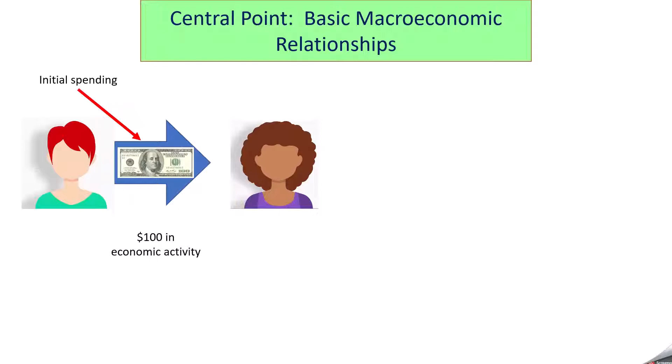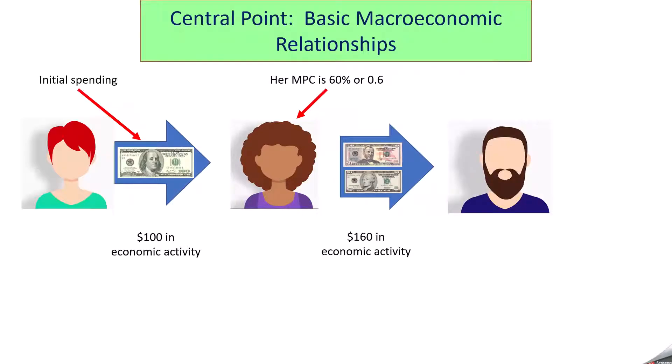Now she's received $100 in new income, and she has to decide, what am I going to do with this new income, this additional income? Maybe her MPC is a 60% or a .6. So she decides to spend $60 of that $100 and save the other $40. And when we add that to the $100 that's already been spent, we now see that there's $160 in economic activity that's occurred from that initial spending impact.